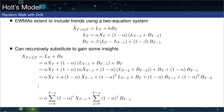From the top, the first thing we see is that the H step-ahead forecast depends on two things: L_T, which is the level, and B_T, which is the trend. We also see that it depends on H times B_T — that is, the further you go in the future, the more important the trend becomes.